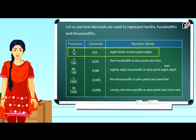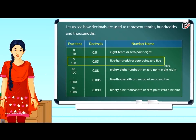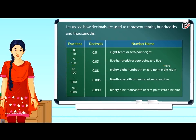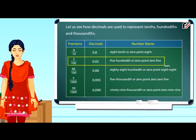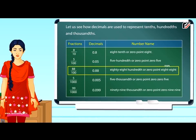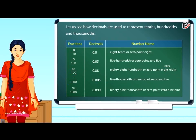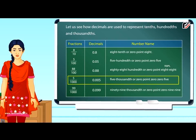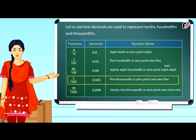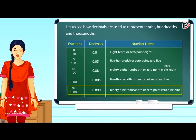Let us see how decimals are used to represent tenths, hundredths and thousandths. 8/10 is written as 0.8, and the number name is 8 tenths. 5/100 is written as 0.05. 88/100 is written as 0.88. 5/1000 is written as 0.005.